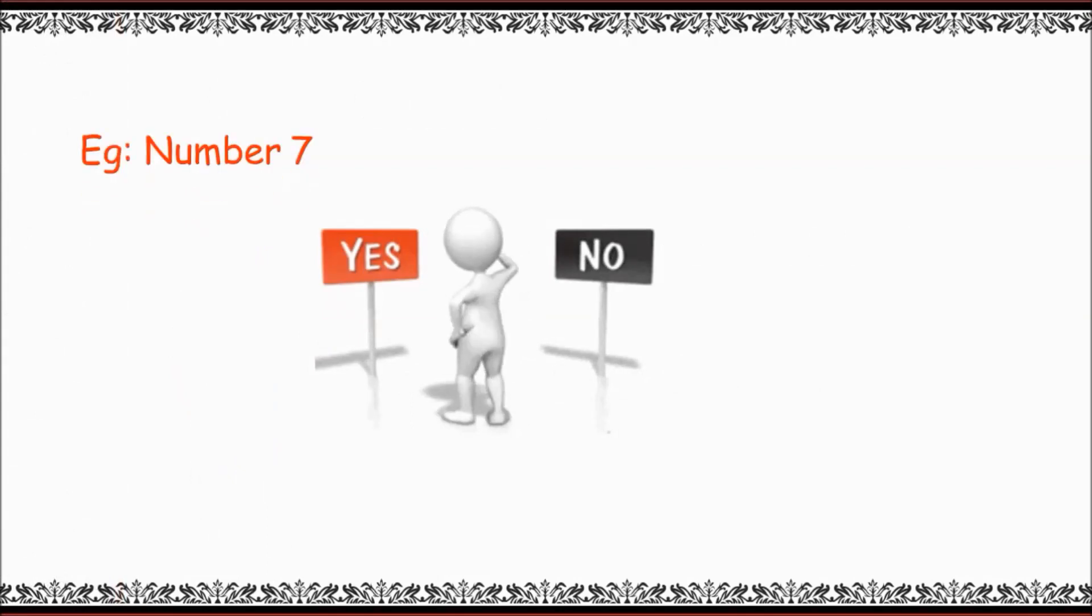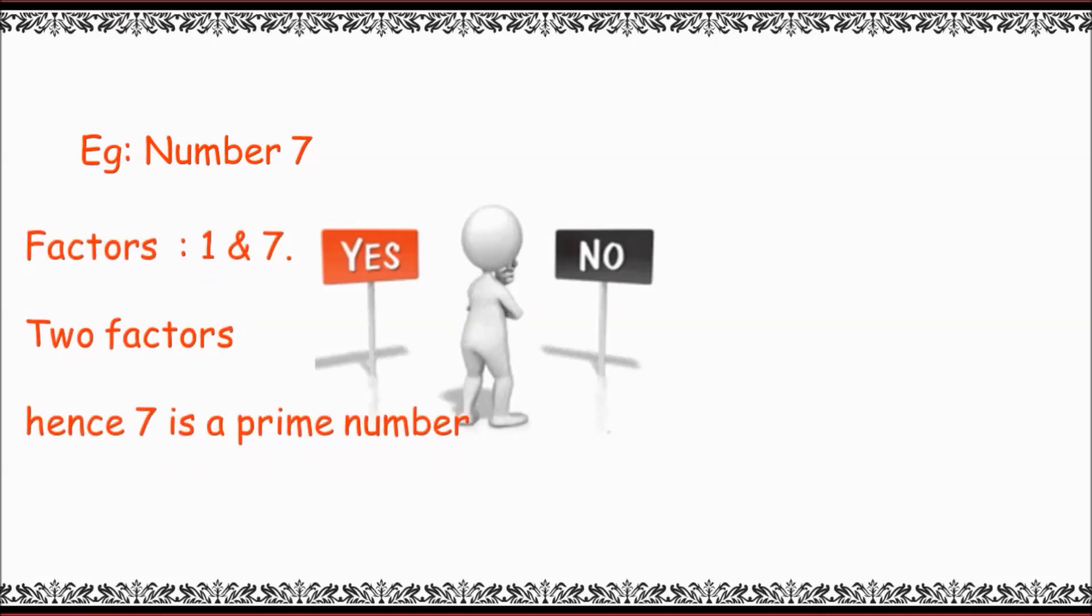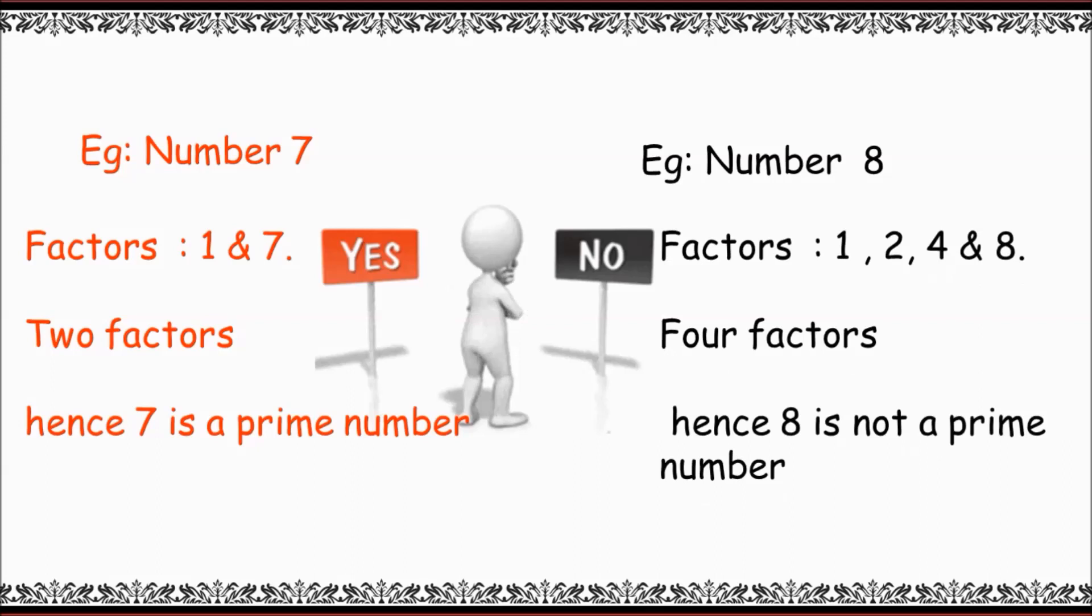Consider number 7. It has only two factors: 1 and 7. Hence, 7 is called a prime number. On the other hand, let's have number 8, which has four factors: 1, 2, 4, and 8.